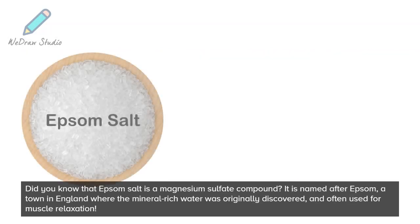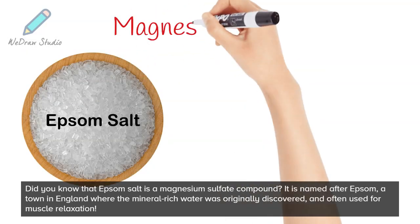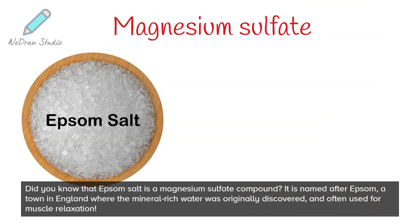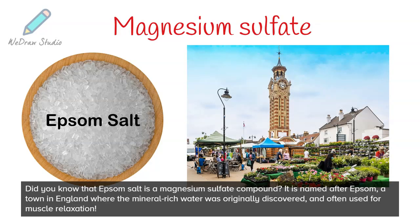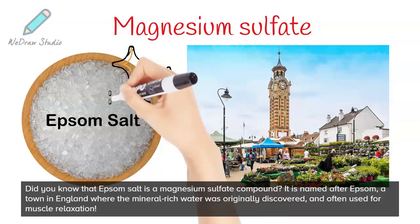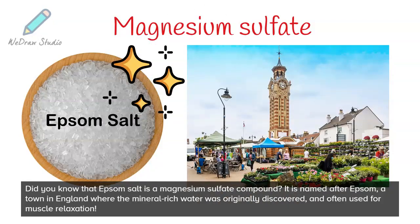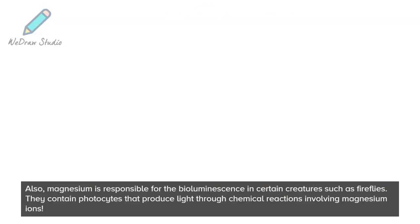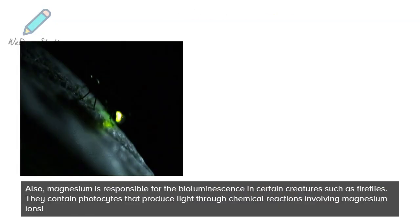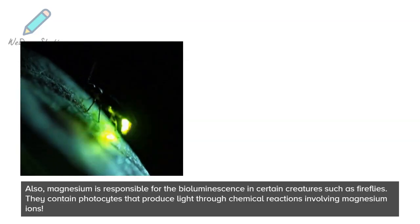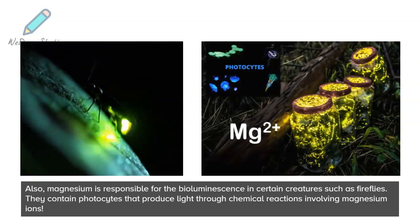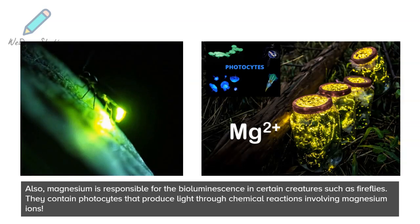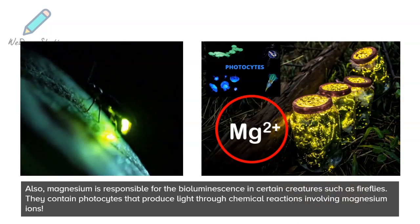Did you know that Epsom salt is a magnesium sulfate compound? It is named after Epsom, a town in England where the mineral-rich water was originally discovered, and it is often used for muscle relaxation. Also, magnesium is responsible for the bioluminescence in certain creatures such as fireflies. They contain photosites that produce light through chemical reactions involving magnesium ions.